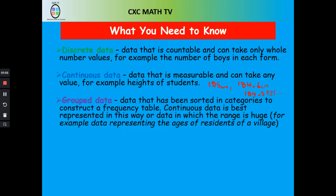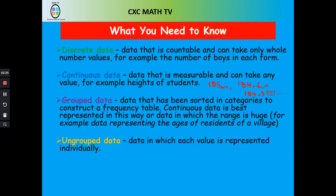The next type of data is grouped data — this is data grouped by category. For example, looking at ages in a research study, we might put ages 5 to 7, then 8 to 10, then 11 to 15. That's grouped data. Ungrouped data is data just given as it is — also called raw data.